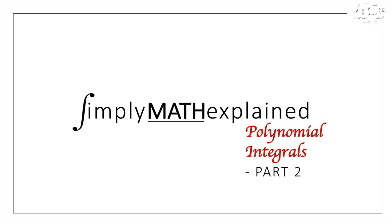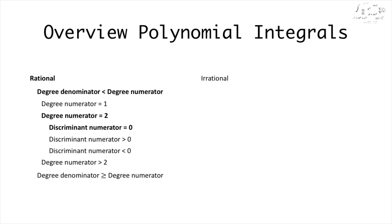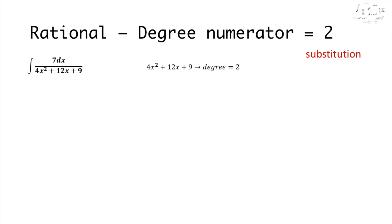First a quick overview of the different integrals we will see. In this movie I will show a few examples of integrals of rational polynomials with the degree of the numerator equal to 2 and the degree of the denominator smaller than the degree of the numerator, so 0 or 1. To solve these questions we first have to calculate the discriminant of the numerator. This one is either equal to 0 or smaller or greater than 0.